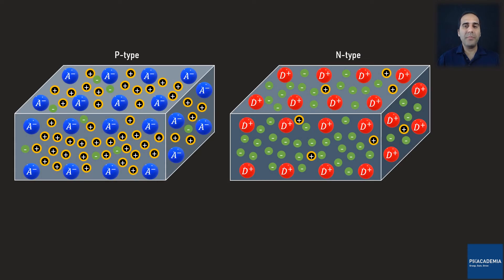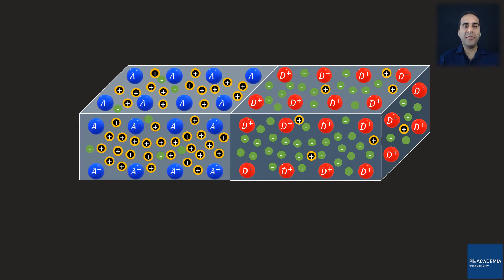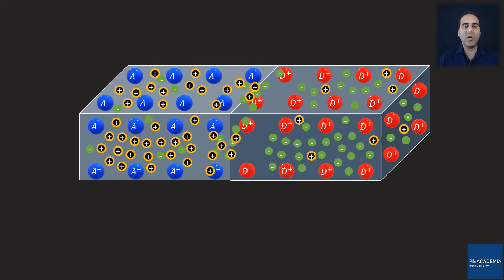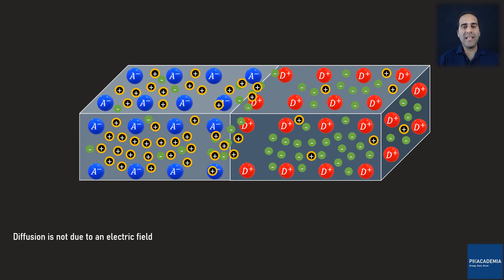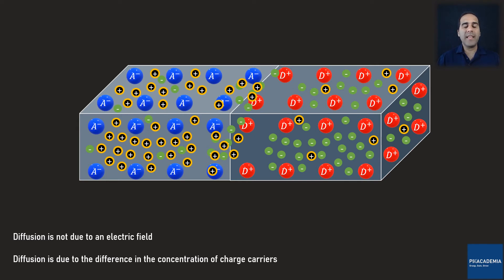Setting the pressurized container analogy aside, let's take a closer look at the real diffusion process when a real PN junction is formed. Before the PN junction forms, both the P and N type semiconductors are neutral. Once the PN junction forms, the majority charge carriers — free electrons on the N side near the junction — diffuse into the P side, and the majority charge carriers of the P semiconductor — holes — diffuse into the N side. The diffusion of electrons and holes is not due to an electric field between positive and negative charges; rather, it is due to the difference in the concentration of charge carriers, comparable with the pressurized and vacuum N and P containers respectively.